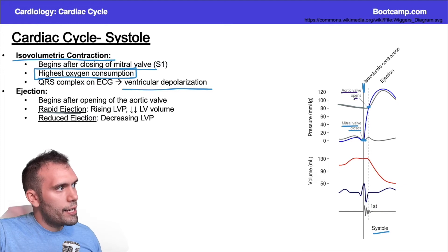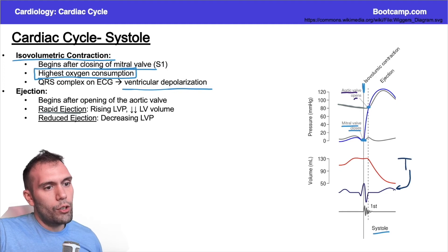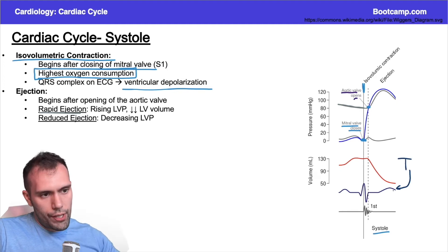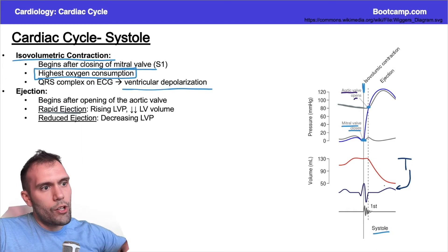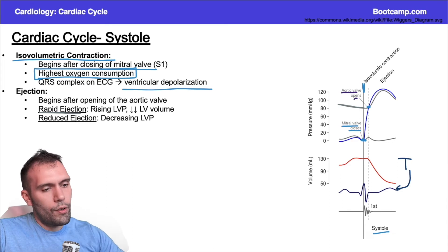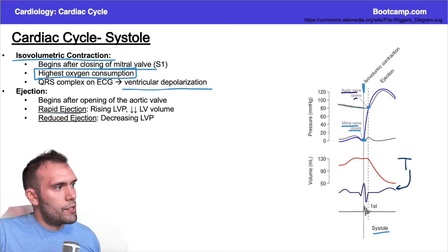You can also see the T wave peeking through, which represents ventricular repolarization. It happens after we depolarize — ventricular repolarization generally occurs right before diastole, with a little bit extending into diastole.